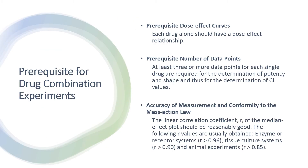Now that we have reviewed the principles behind the calculations and models of CalcuSyn, let's look into data analysis. To ensure robust data analysis, we first need to ensure the experiment is properly designed. First, prerequisite dose-effect curves: each drug alone should have a dose-effect relationship. Both potency and shape parameters are essential for determining synergism or antagonism. If one of the two drugs has no effect by itself, then synergism or antagonism cannot be determined. Instead, potentiation or suppression should be determined.